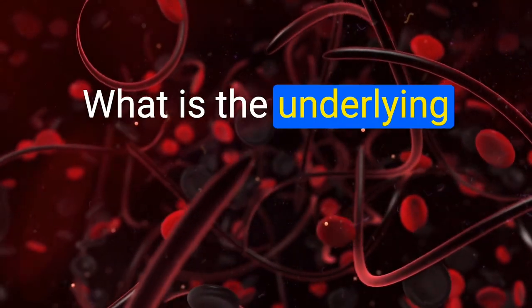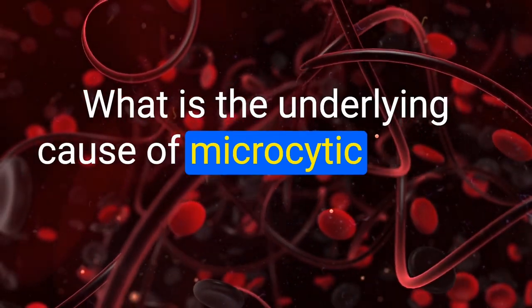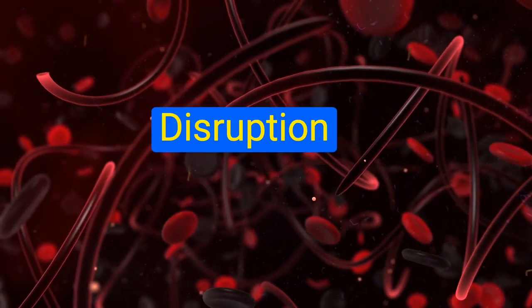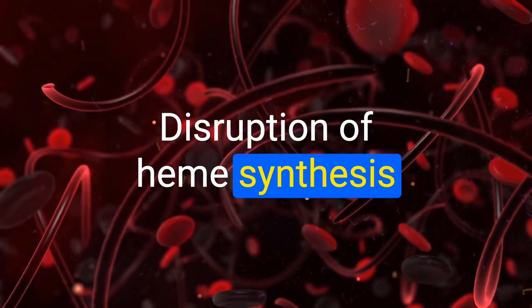What is the underlying cause of microcytic anemia seen with lead poisoning? Disruption of heme synthesis.